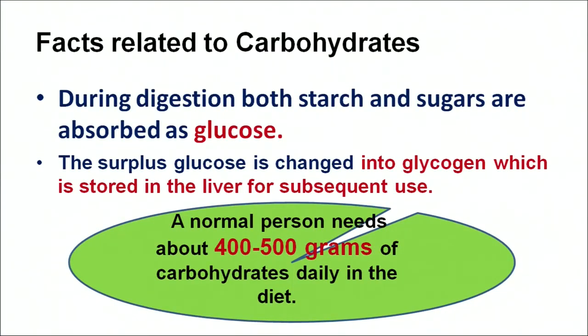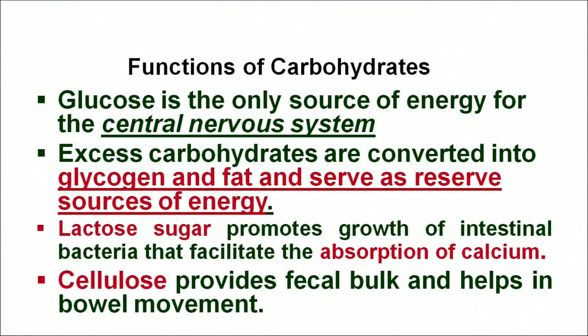A few facts related to carbohydrates: during digestion, carbohydrates — basically starch and sugars — are absorbed as glucose. Excess glucose is converted into glycogen and stored in the liver for subsequent use. A normal person needs 400 to 500 grams of carbohydrate in their daily diet. Glucose is the only source of energy for the central nervous system. Excess carbohydrates are converted into glycogen as a reserve of energy. Lactose sugar promotes growth of intestinal bacteria that facilitate absorption of calcium. Cellulose provides fecal bulk and helps in bowel movement.